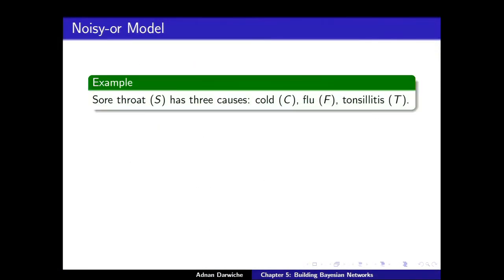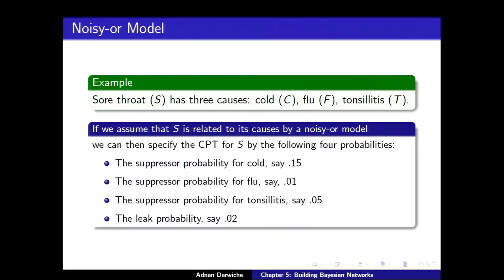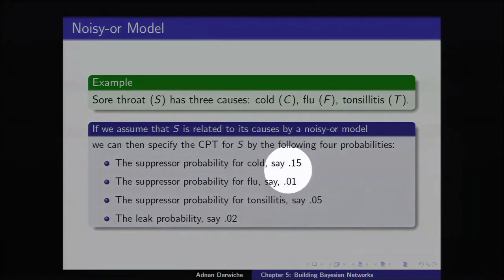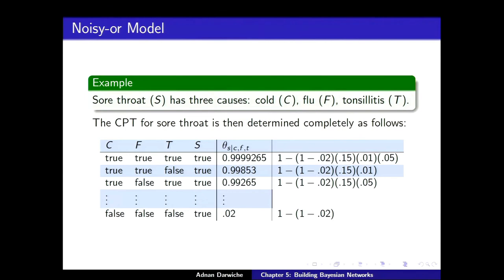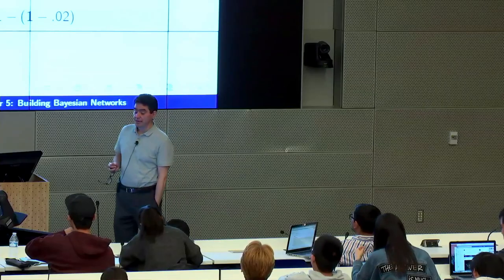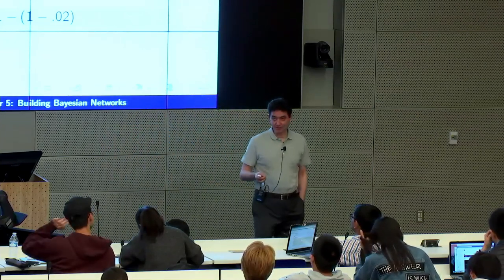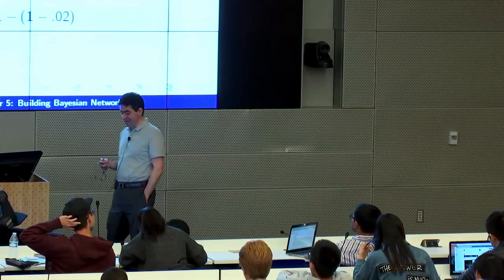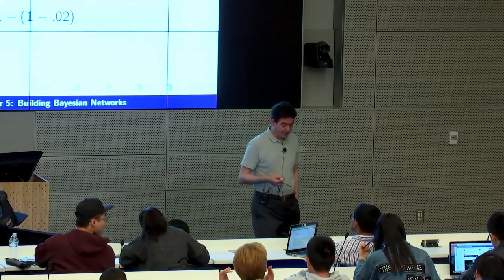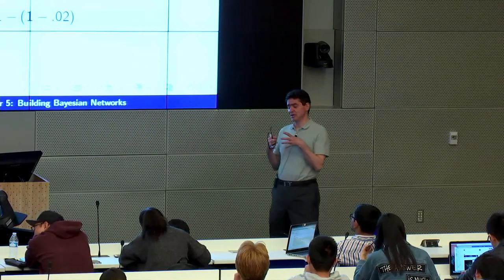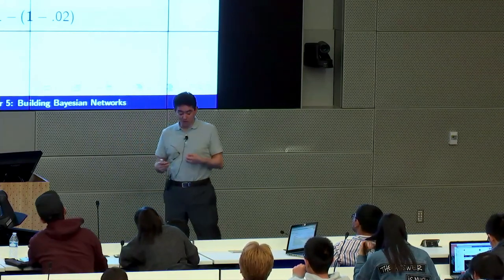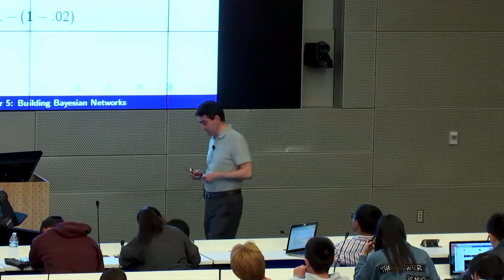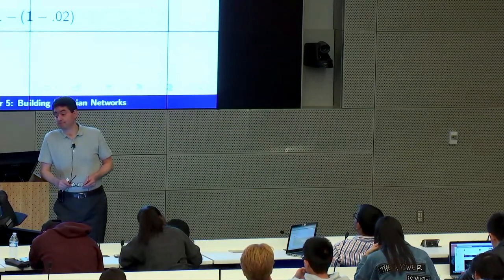Here's a complete example: sore throat has three causes — cold, flu, and tonsillitis. Using a noisy OR model, the suppressor probabilities are 15%, 1%, and 5% respectively, and the leak probability is 2%. You plug into the equation and from these five numbers you establish the whole CPT. People have also proposed the noisy AND model and variants of the noisy OR with slightly different semantics, but what I described is the standard. This illustrates the game of assuming a micro-model between a node and its parents to specify the CPT compactly.